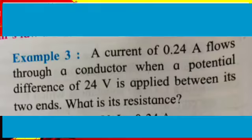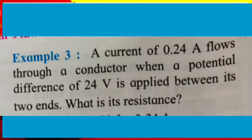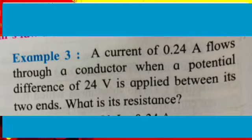Problem number 3: a current of 0.24 ampere flows through a conductor when a potential difference of 24 volt is applied between its two ends. What is the resistance of the circuit? So we have to calculate the resistance of a conductor.